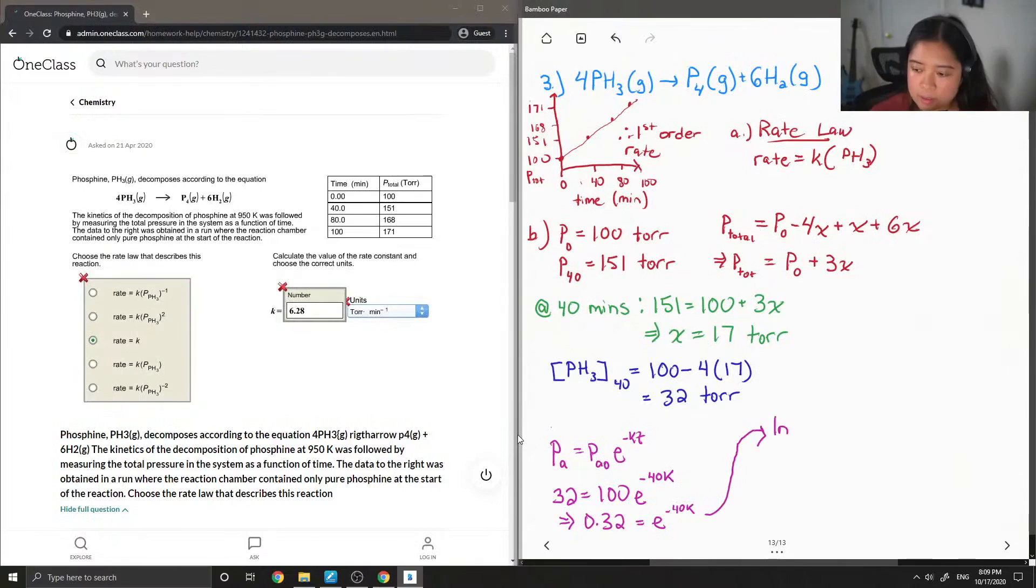Okay, so I'm going to take the ln of both sides in order to get rid of that e. So ln of 0.32 is equal to negative 1.139. And then I got my k value as 0.0285 inverse meters.